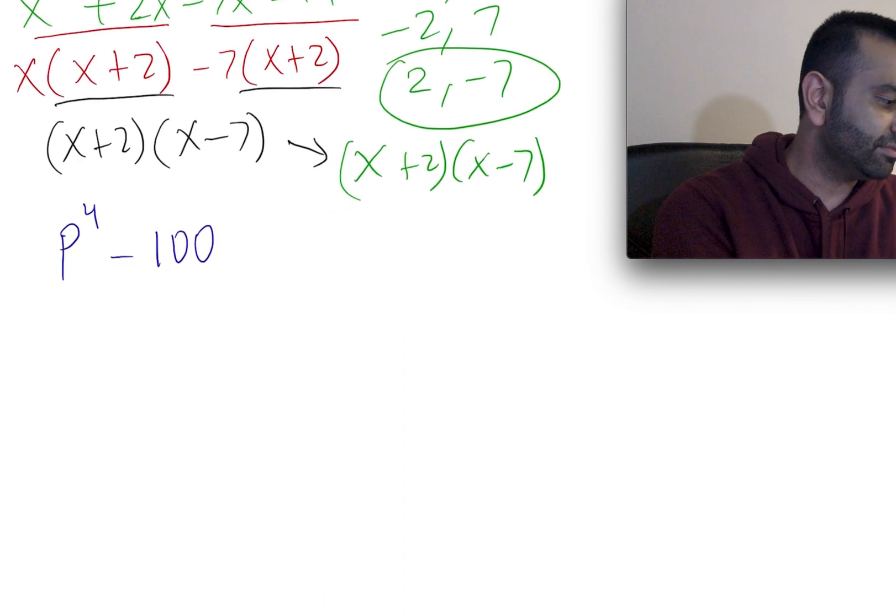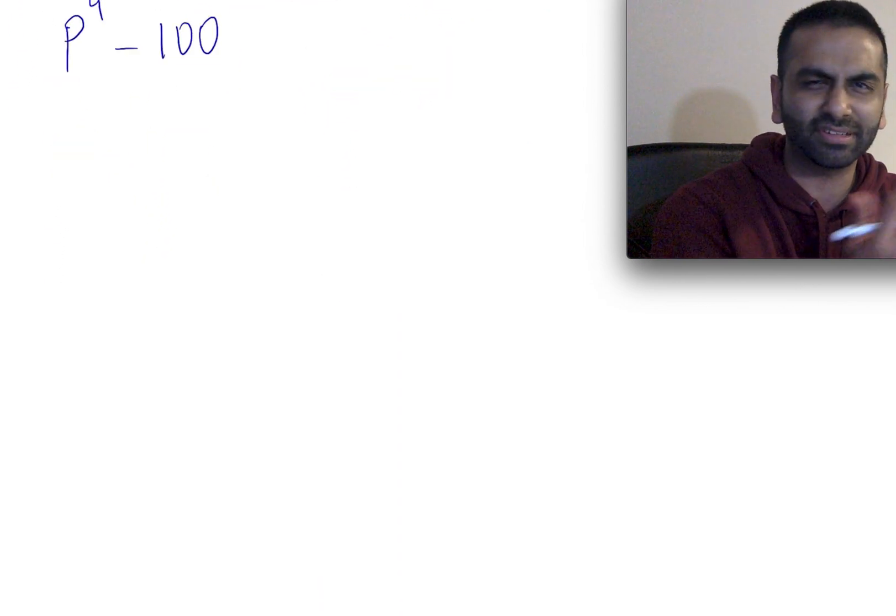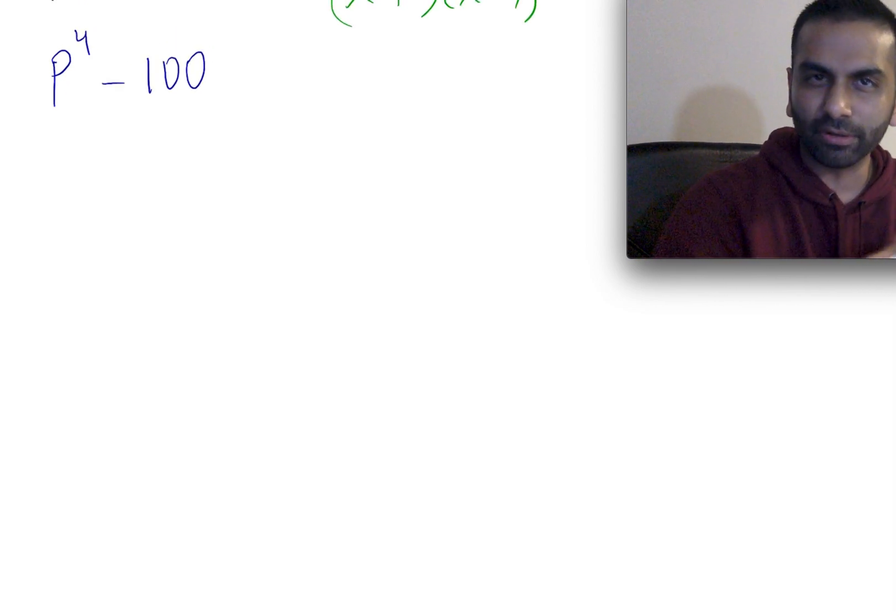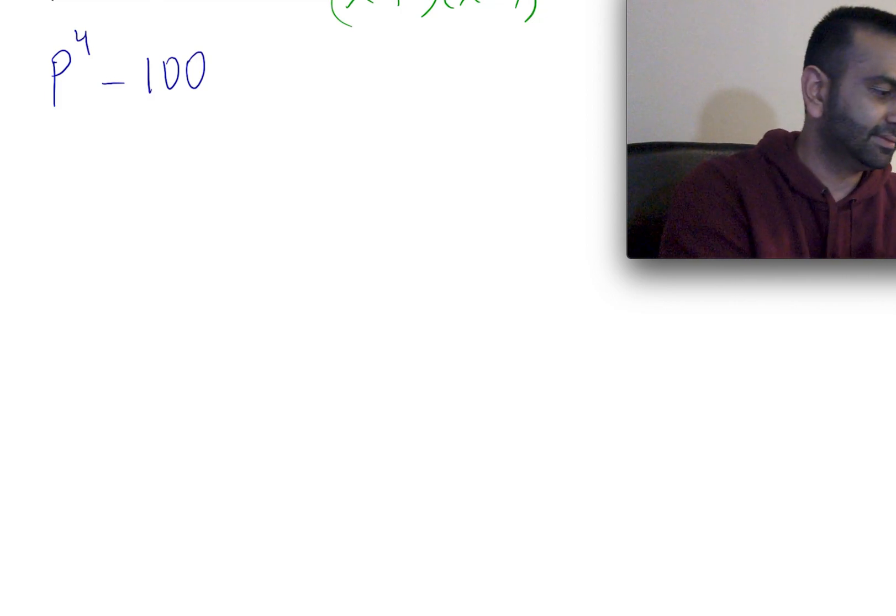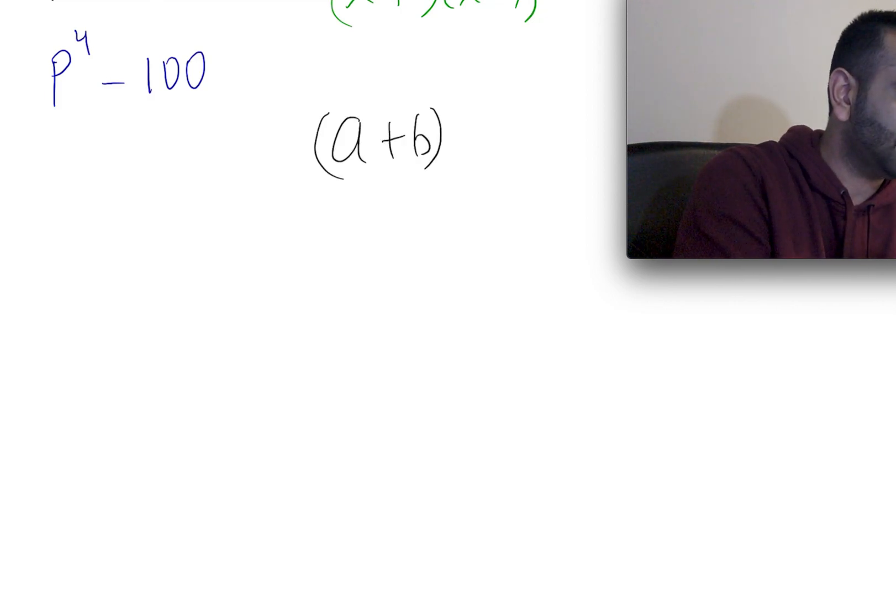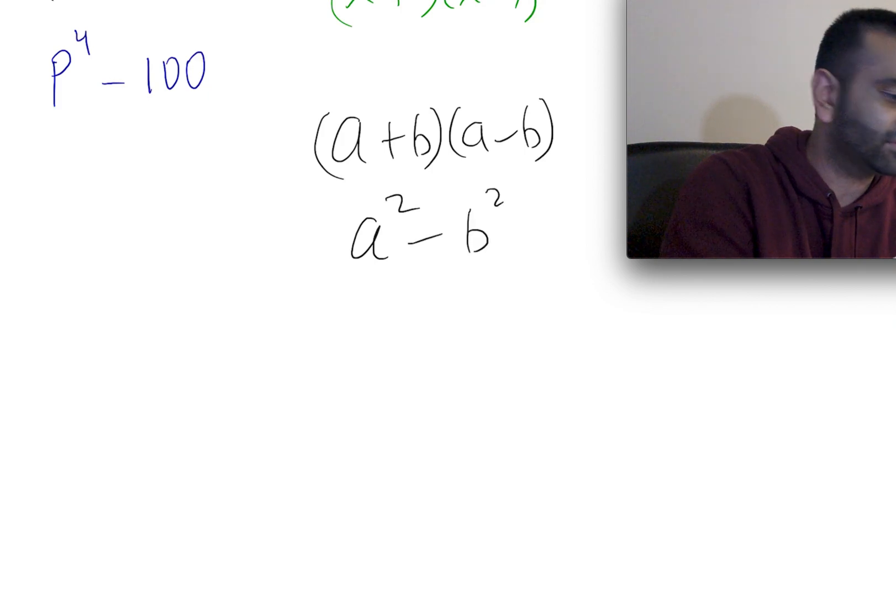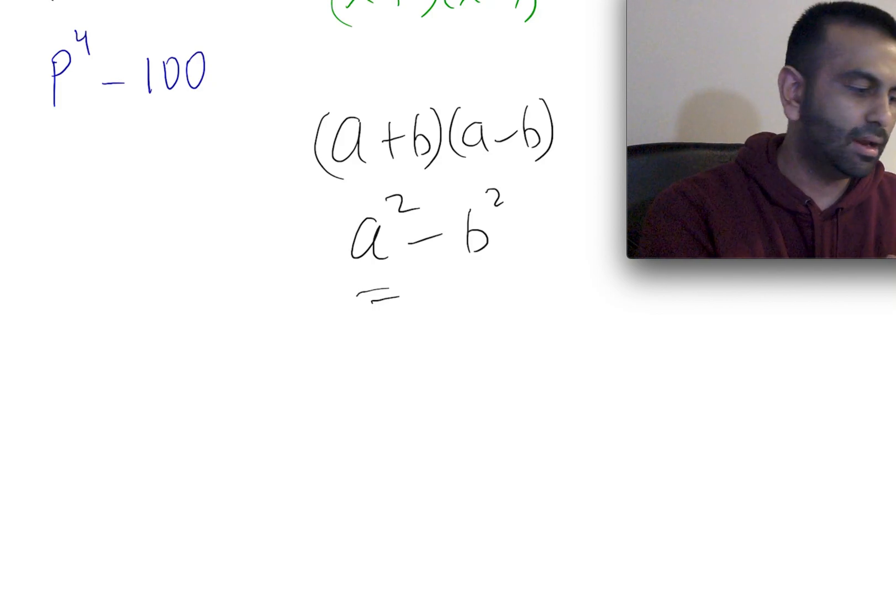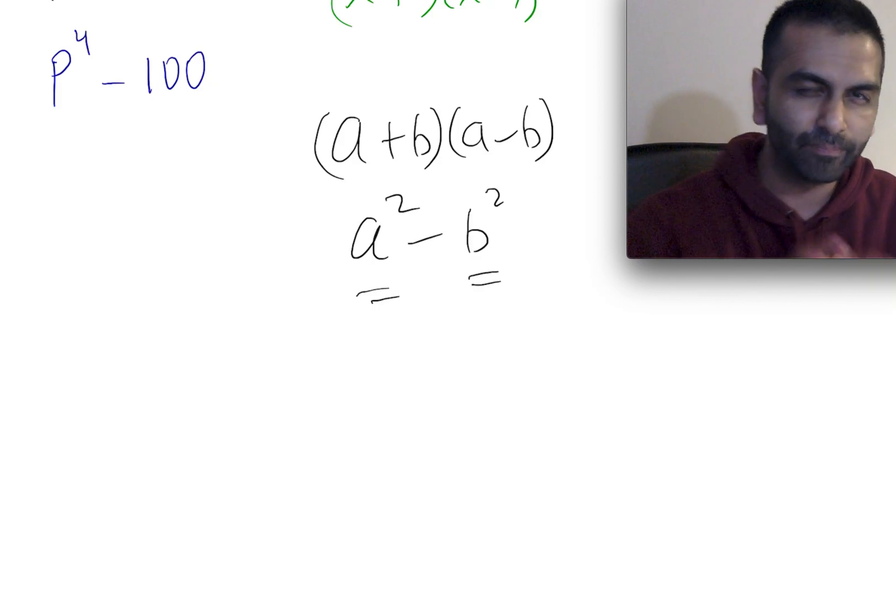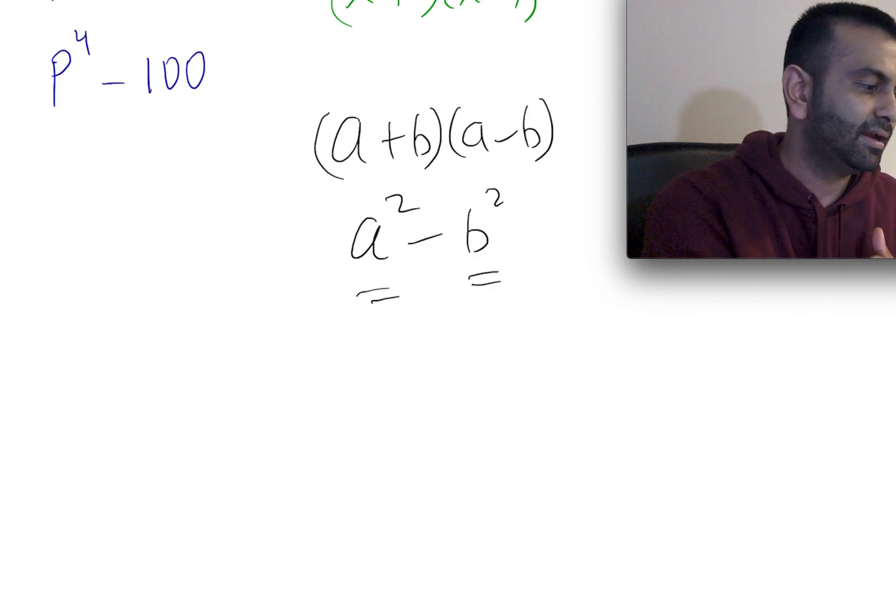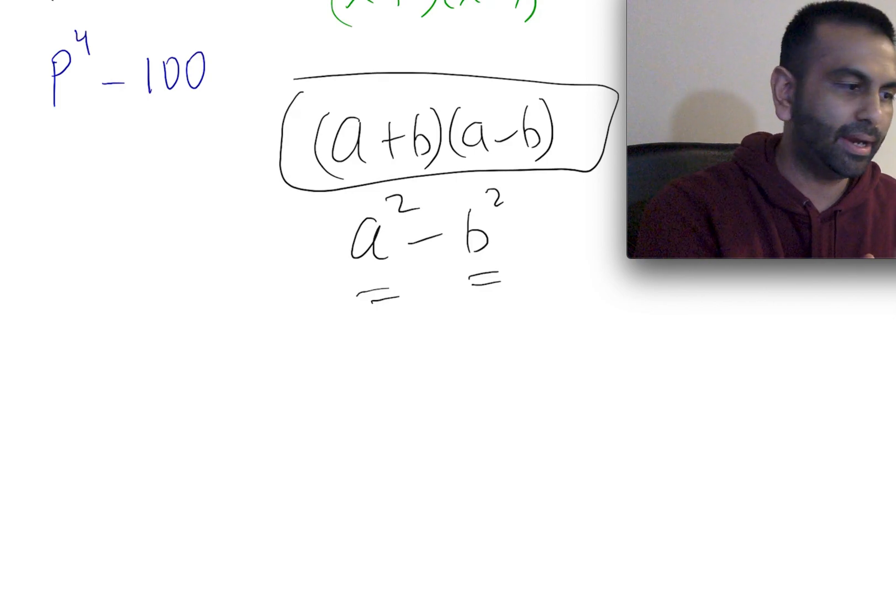Now, finally, you might have a problem like this, which looks like you can't really factor that. But one rule from expanding is this rule: a plus b times a minus b. That always, when you foil it out, foils out to be a squared minus b squared. So anytime you see something that's a perfect square minus something else that's also a perfect square, something should go off in your mind that if you needed to, you could always factor that as a plus b, a minus b.